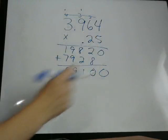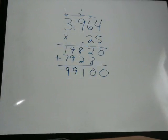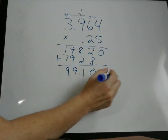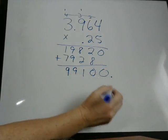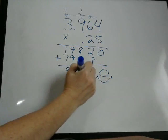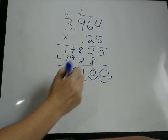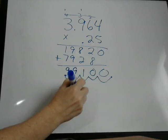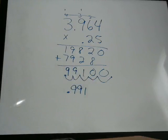So, 1, 2, 3, 4, 5. We're going to move the decimal point in our answer five places to the left. If we think of it being over here, 1, 2, 3, 4, 5. So our answer is going to be 0.991.